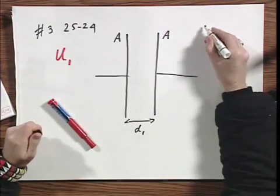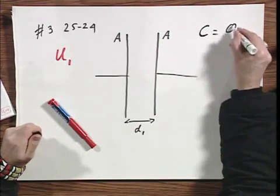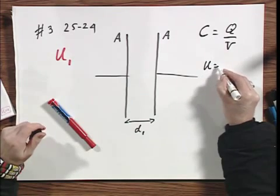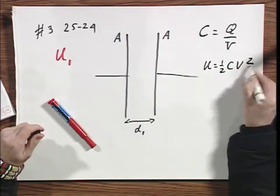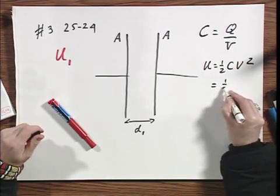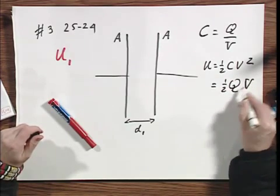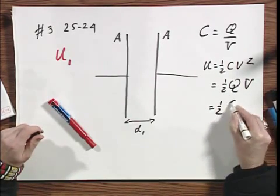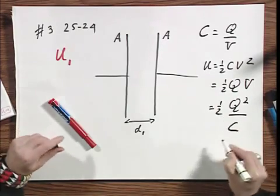Let me just write down again. C equals Q divided by V. U equals one-half CV squared. You've seen this just right now. It's also one-half QV, and it is also one-half Q squared divided by C.